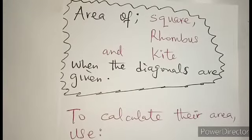The special quadrilaterals are square, rhombus and kite.